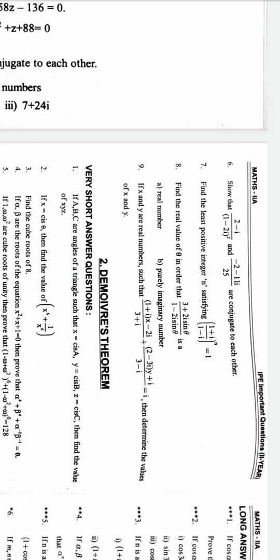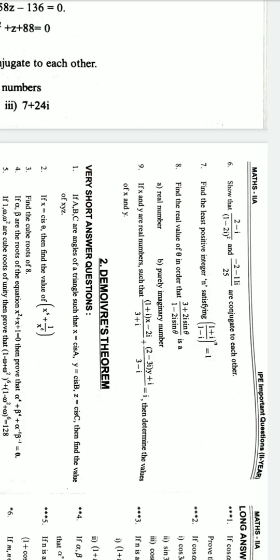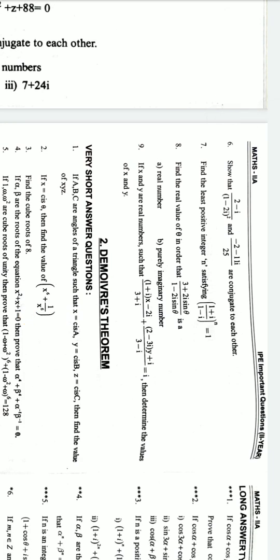Show that 2 minus i by 1 minus 2i whole square equals minus 2 minus 11i by 25 or conjugate to each other. Find the least positive integer n satisfying 1 plus i by 1 minus i whole power n equals 1.